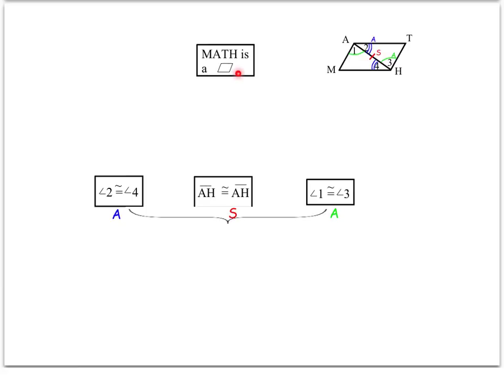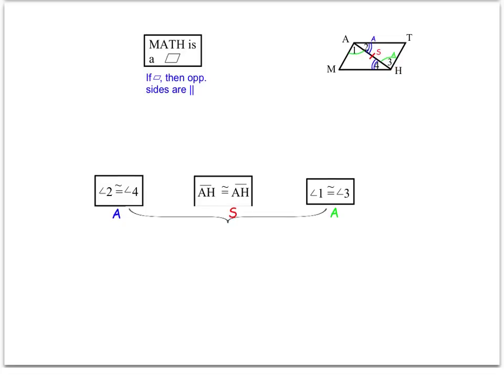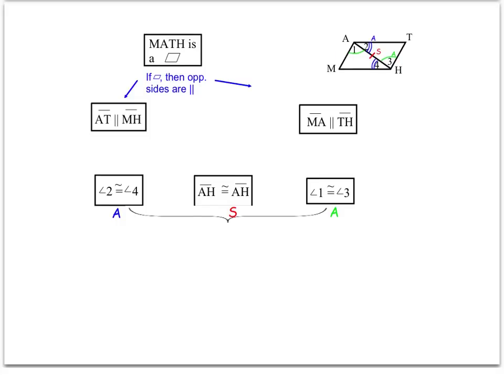Because MATH is a parallelogram, I have two sets of parallel sides. So the first if-then statement I'll put up there comes right from your sheet: if I have a parallelogram, then the opposite sides are parallel. I know I have two sets of opposite sides, so I can split that into each set. Remember, the if-then statement between the boxes is always: if this box, then that box. Make sure those if-then statements match up as you go along with your flow proof.